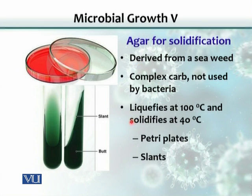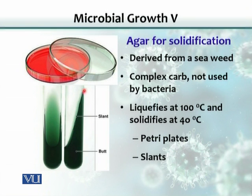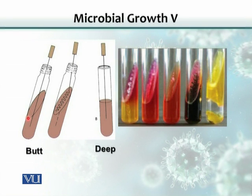The property of agar is such that when we boil it at 100 degrees Celsius, it is liquefied and becomes liquid in nature. But when we cool it to below 40 degrees Celsius, it solidifies and becomes solid. We can pour it into petri plates or we can make slants. This is a slant here — it has a kind of angled surface. The whole tube filled with the medium is called a butt.